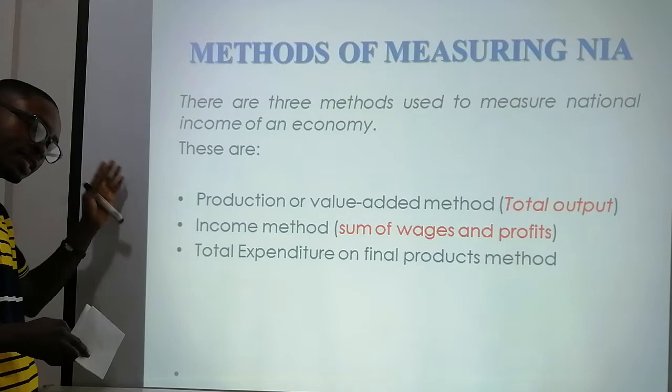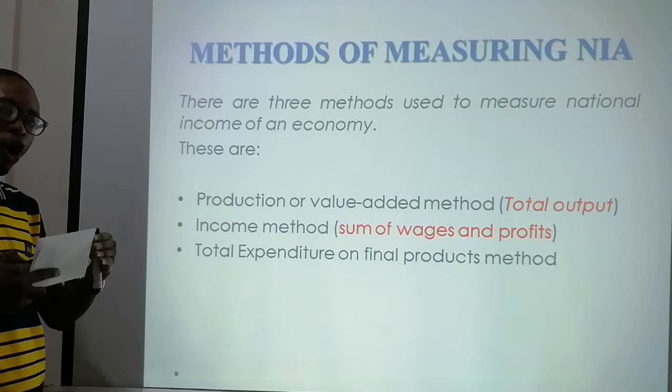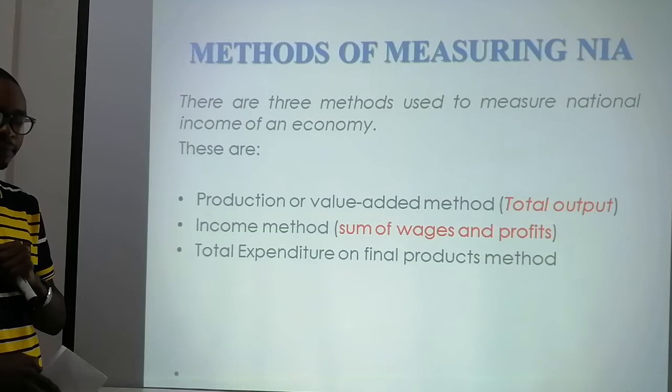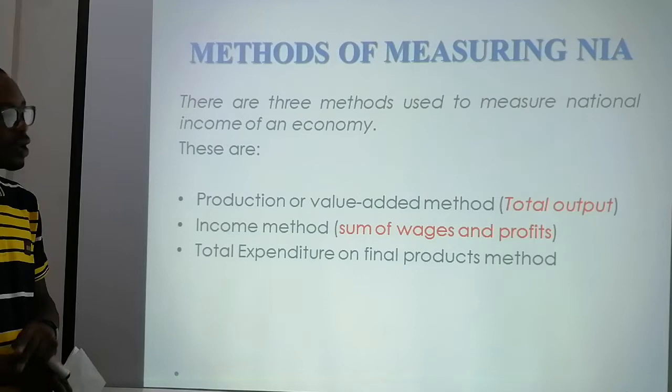How do we measure national income? We have three methods. The first is the production or value-added method, also called total output. Here the national income is measured through the production of goods and services the country produces — with the total output of goods and services a country is able to produce.